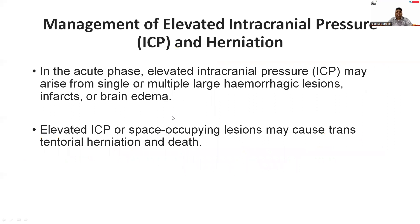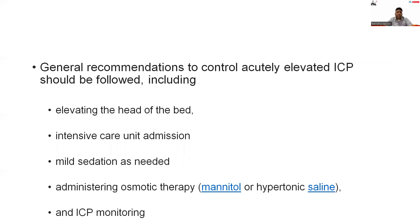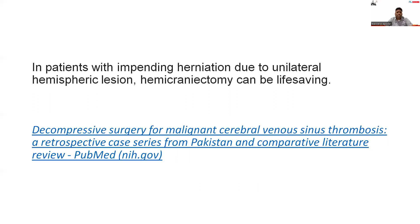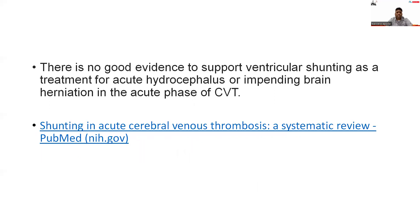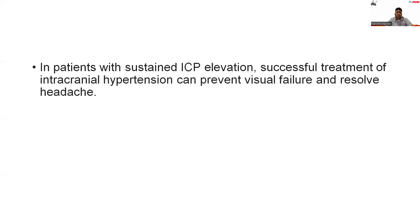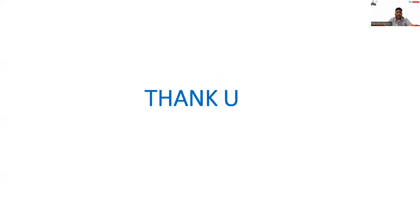Regarding management of elevated intracranial pressure and herniation: in the acute phase, elevated ICP may arise from single or multiple large hemorrhagic lesions, infarcts, or brain edema. Elevated ICP or space-occupying lesions may cause transtentorial herniation and death. To prevent this, management includes elevation of the head end of the bed, ICU admission, mild sedation, administration of osmotic therapy such as mannitol or hypertonic saline, and ICP monitoring. In patients with impending herniation due to a unilateral hemispheric lesion, hemicraniectomy can be life-saving. In patients with sustained ICP elevation, successful treatment of intracranial hypertension can prevent visual failure and resolve headache.